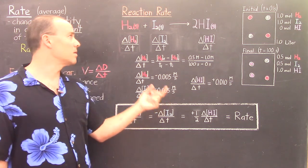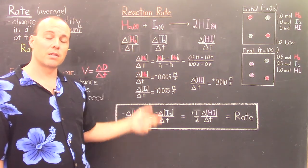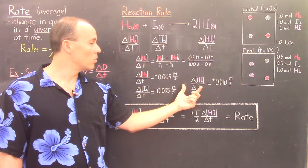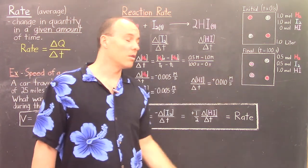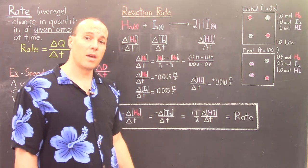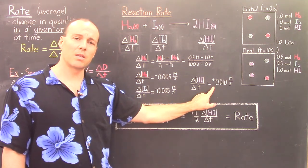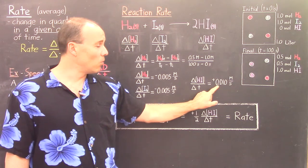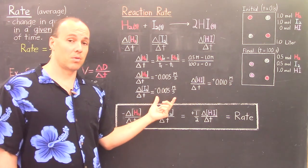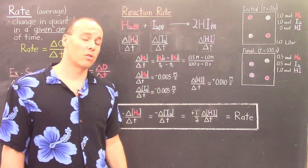The product, HI, has a rate of change equal to final minus initial concentration — 1 minus 0 — divided by the change in time, 100 minus 0 — giving positive 0.01 M/s. This is positive because HI is being formed. The rate of formation is twice as big as the reactant rates, and that should make sense because the coefficient is 2, so the rate of formation should be twice as fast.